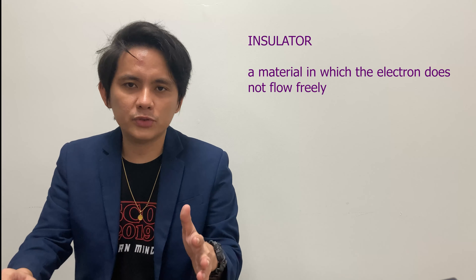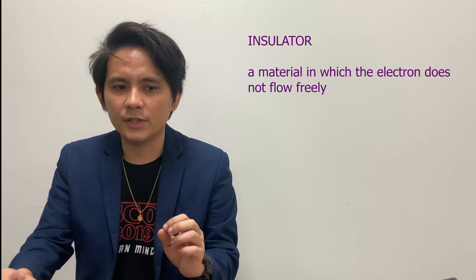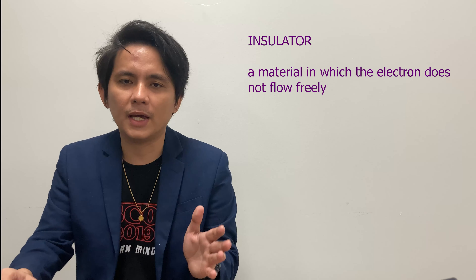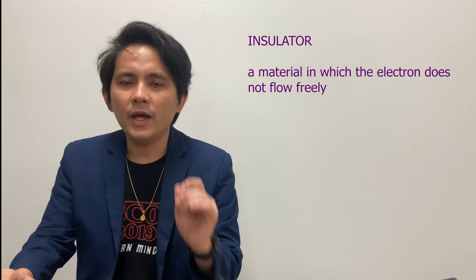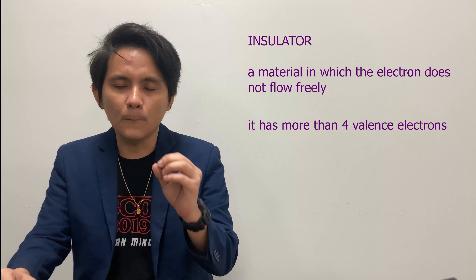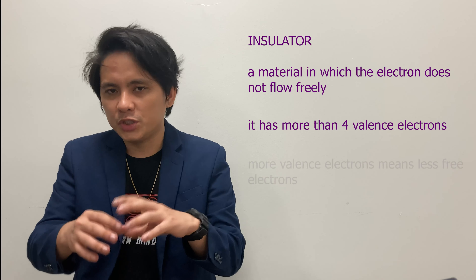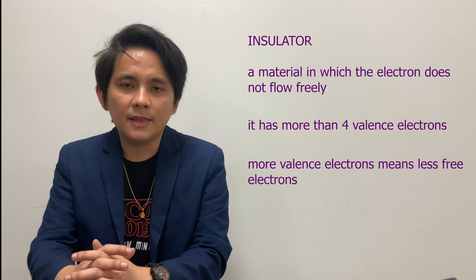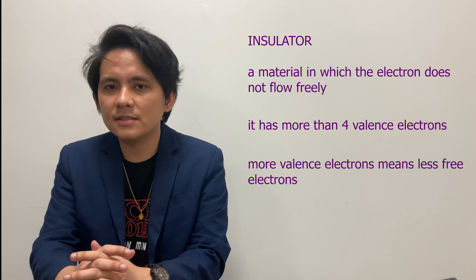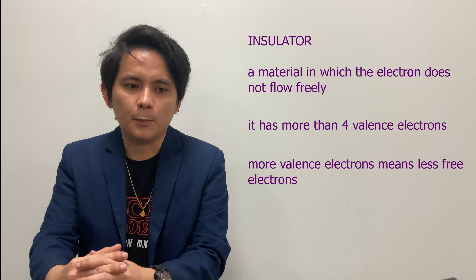The next material we are going to discuss is the insulator. These are materials which offer a very low level of conductivity under pressure from an applied voltage source. One of the characteristics of insulators is that they have more than four valence electrons. If we have more electrons which stay in the valence band, then there are fewer free electrons that will travel across the conduction band.